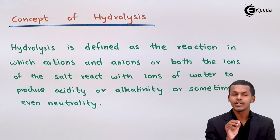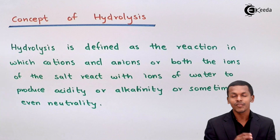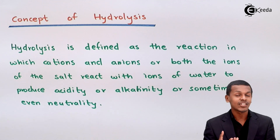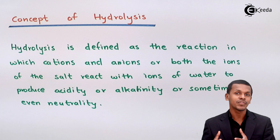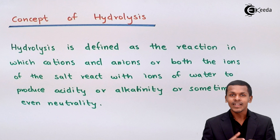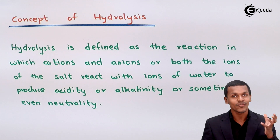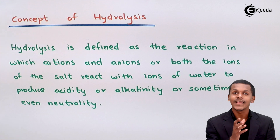But what if a particular cation or anion of the salt, when dissolved in water, reacts with the H⁺ ion or OH⁻ ion of the water? Obviously it would affect the concentration of the H⁺ ion along with the OH⁻ ion. So among both H⁺ and OH⁻, there would be an increase in concentration of one particular species.